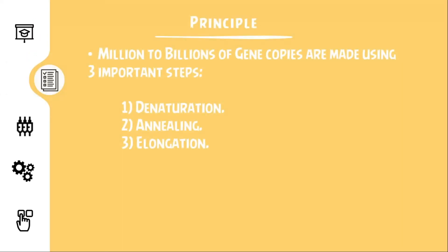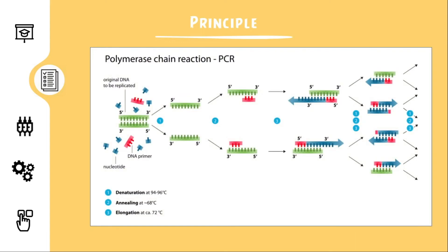The principle. The principle behind this technique involves three main steps so as to obtain millions to billions of copies of the particular gene of interest. They are denaturation, annealing, and elongation. This is a depiction of how the process would continue — one being denaturation, two being the step of annealing, and three being the step of elongation.